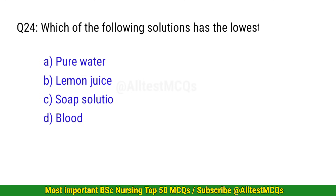Question 24. Which of the following solutions has the lowest pH? The correct option is B: Lemon juice.